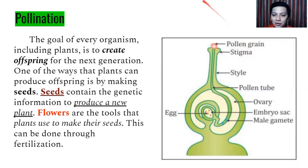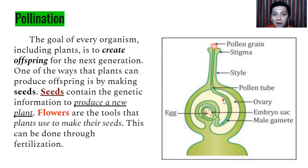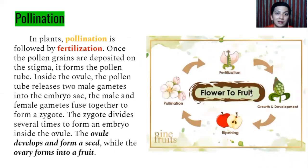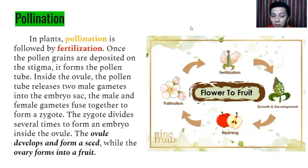This is done through fertilization. When the pollen grain falls onto the stigma, travels down the style through the pollen tube, and reaches the ovary, the egg meets the pollen grain acting as the sperm — it becomes fertilized. Then the flower will die and the fruit will exist. In plants, pollination is followed by fertilization. Once pollen grains are deposited on the stigma, the pollen tube forms. Inside the ovule, the pollen tube releases two male gametes into the embryo sac, the male and female gametes fuse to form a zygote, which divides to form an embryo. The ovule develops into a seed while the ovary forms into a fruit.